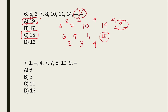We are now on number 7. We have 1, unknown, 4, 7, 7, 8, 10, and 9. Numbers 6 and 7 have the same concept.